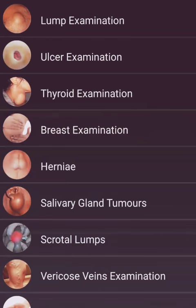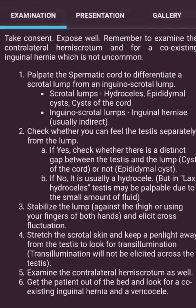Now the scrotal lump examination. Take consent, expose well. Remember to examine the contralateral hemiscrotum and for a coexisting inguinal hernia. Palpate the spermatic cord to differentiate the scrotal lump from an inguinoscrotal lump. Scrotal lumps include hydrocele, epidermal cysts, cyst of the cord. Inguinoscrotal lump includes inguinal hernia. Check whether you can feel the testes separately from the lump.